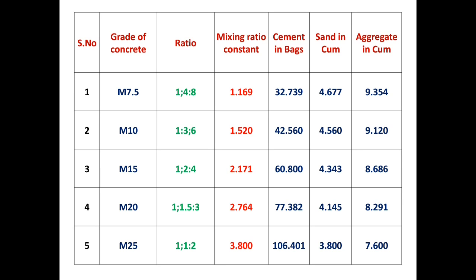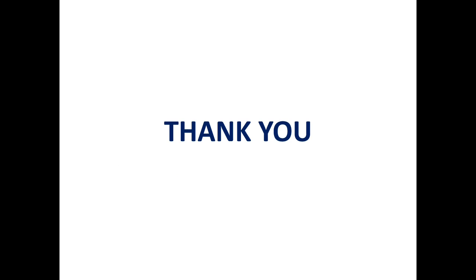For M7.5 fine aggregate: 1.169 × 4 = 4.677 cubic meters of sand. For coarse aggregate: 1.169 × 8 = 9.354 cubic meters. Similarly, you can find the required materials for M10, M15, M20, and M25 grades using the same method.